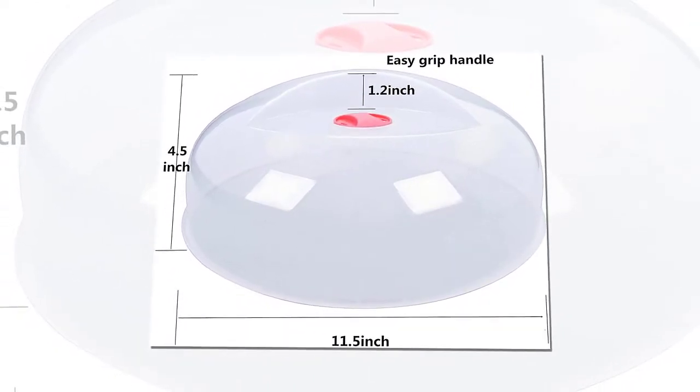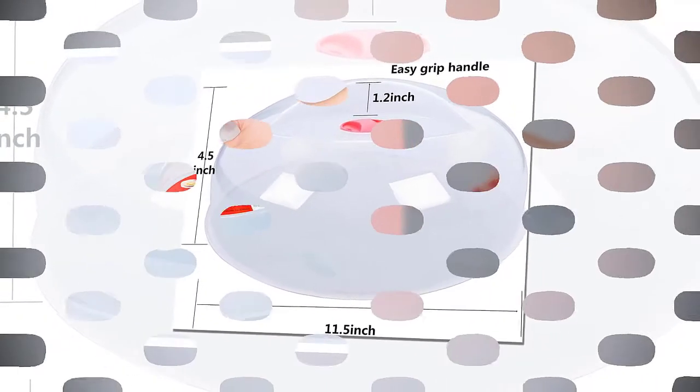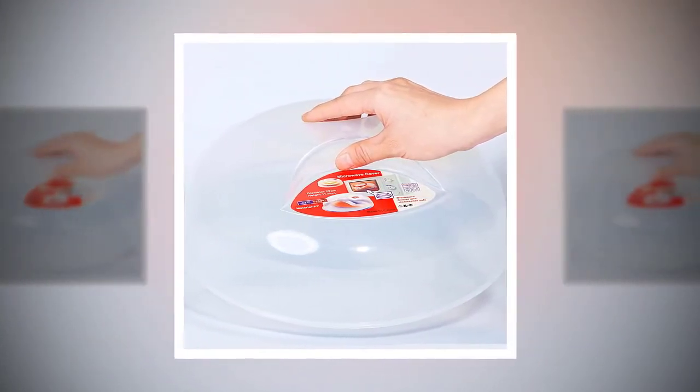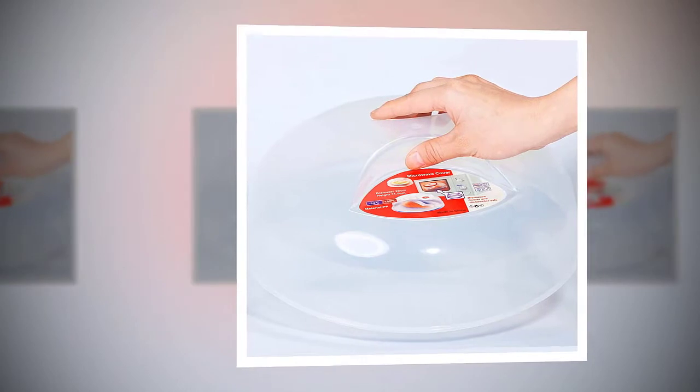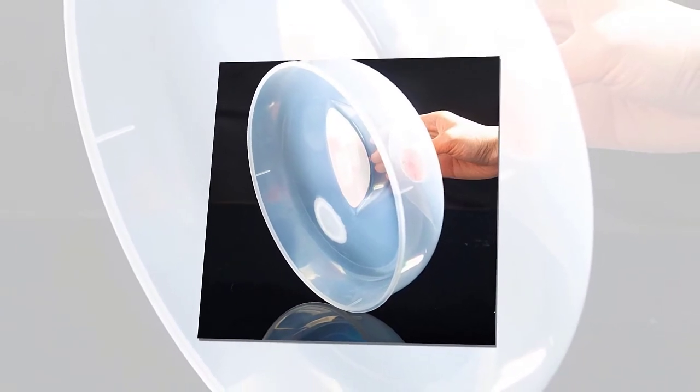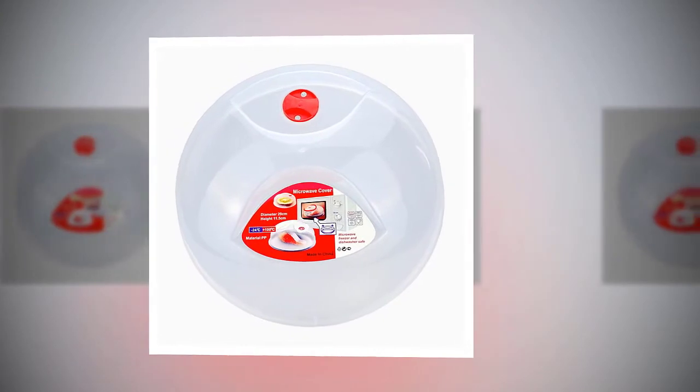Material: Our microwave cover is made of PP (polypropylene), a material used for making nursing bottles and a world-recognized food container safety material. BPA free, feel relieved about usage.